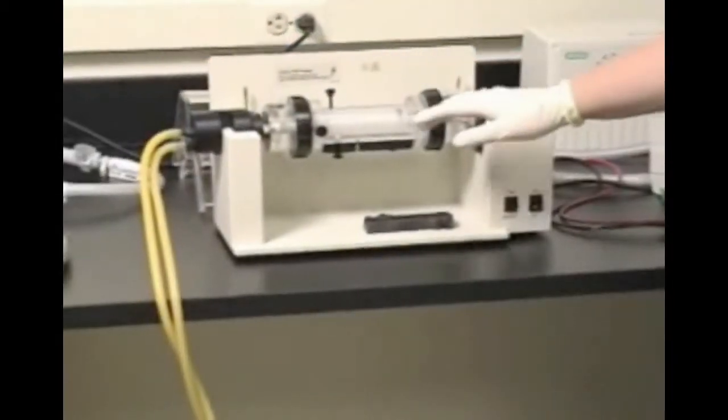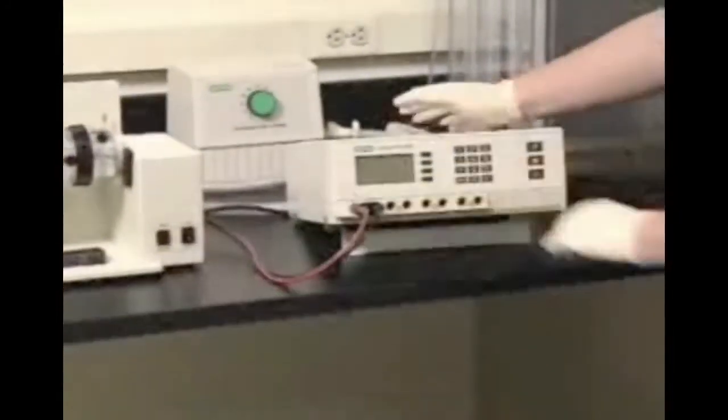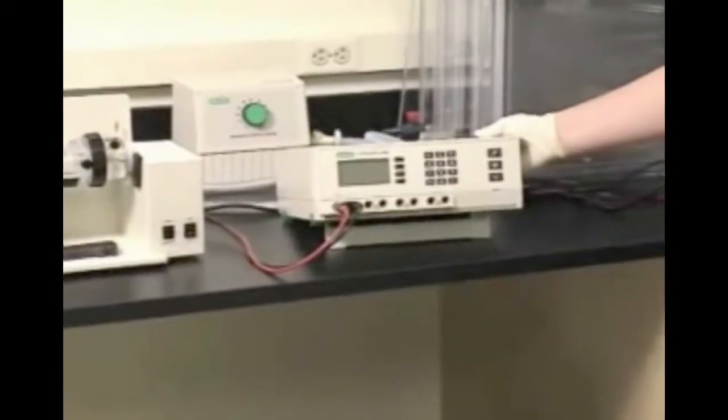Here we show the Rotifor system fully hooked up and ready for a run. You'll notice that the cooling finger is connected to a recirculating water chiller. The temperature in the focusing chamber will be approximately 10 degrees higher than the temperature of the water that flows through the cooling finger. Make sure to set the temperature of the recirculating water chiller accordingly.